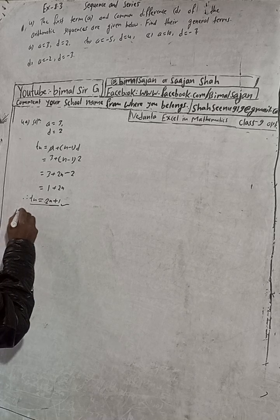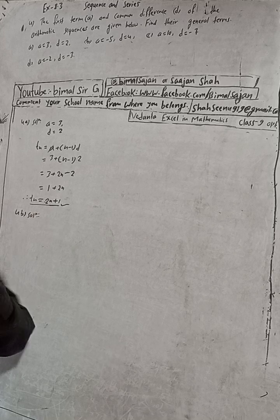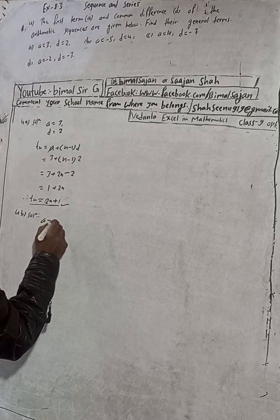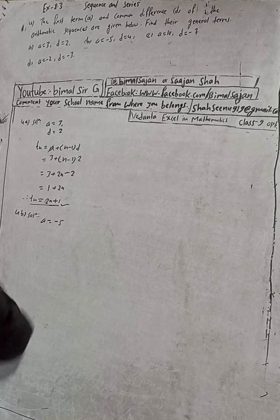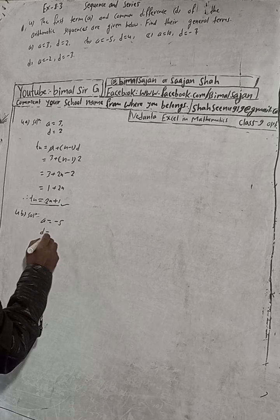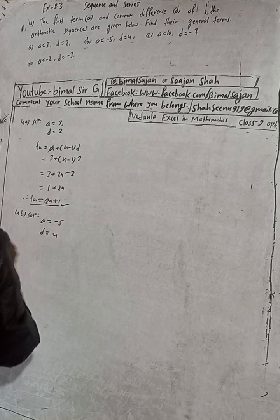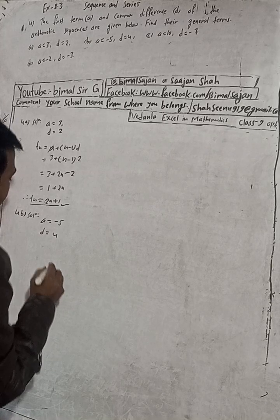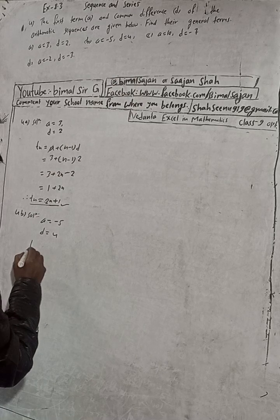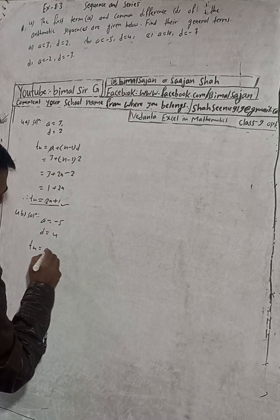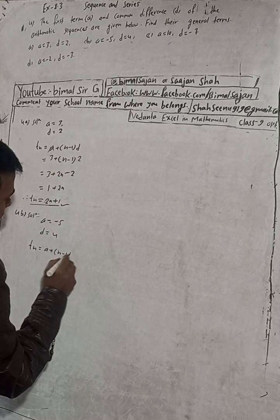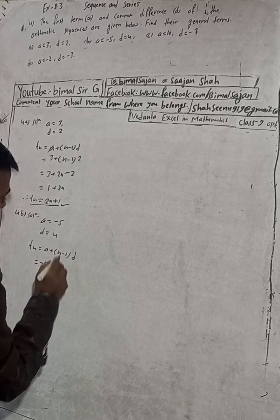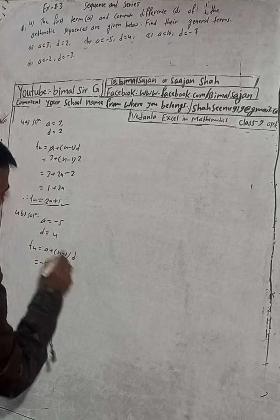For part B solution: the first term A is equal to minus 5, and the common difference D is equal to 4. The general term formula is Tₙ = A + (N-1) × D. So A value is minus 5, plus N minus 1, and D value is 4.